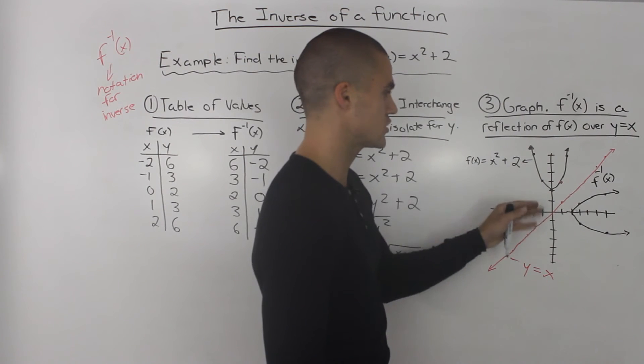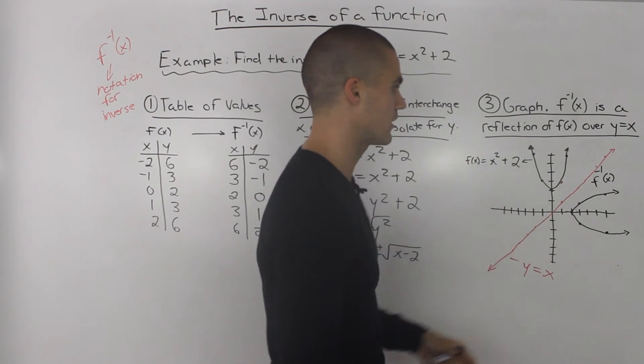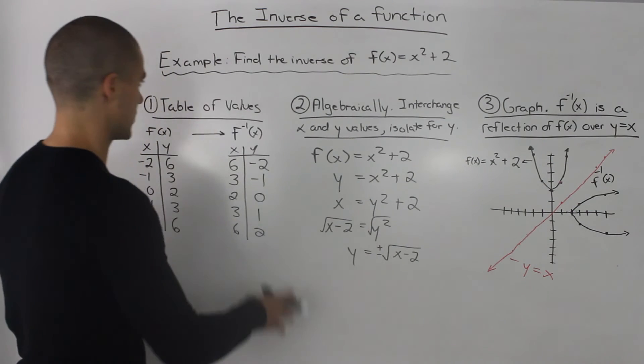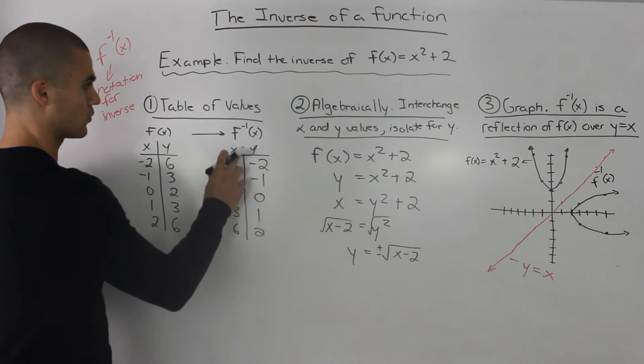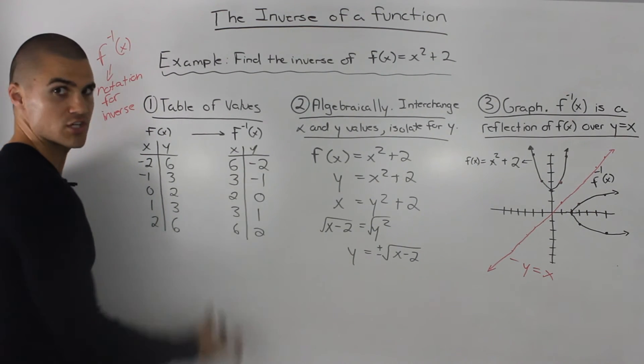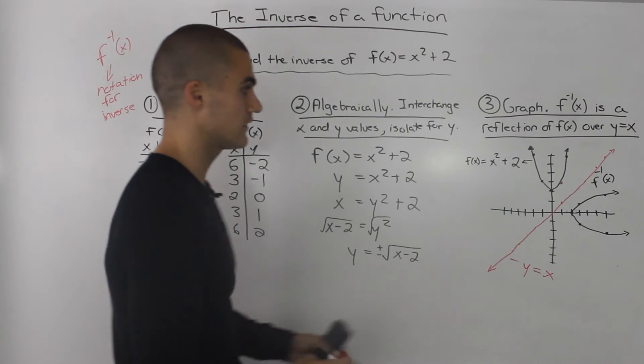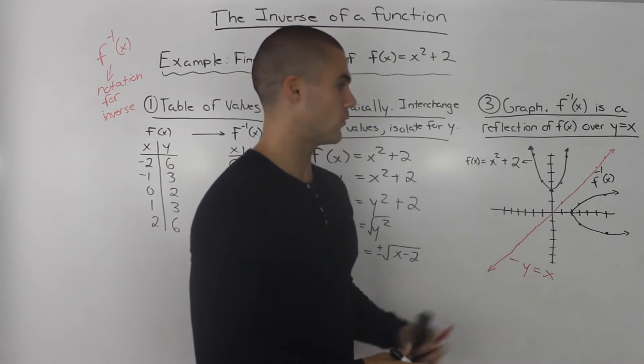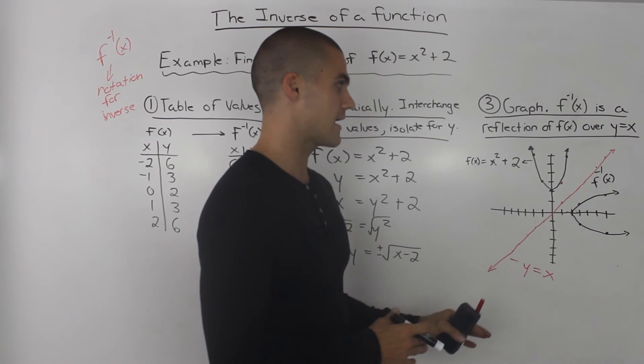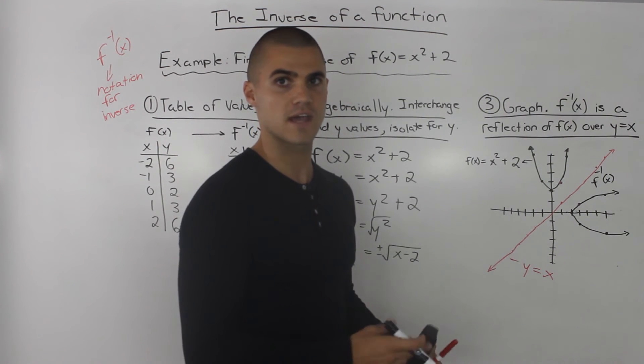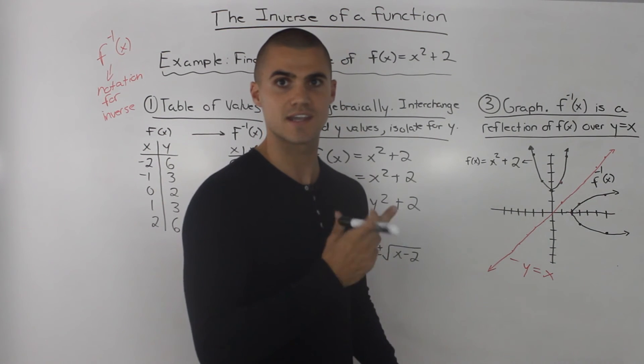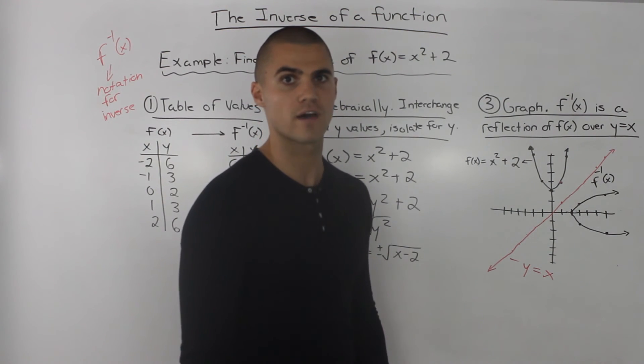And it's always reflected over this line. So that's another way that you can get the inverse if you're given the graph of the function, is just reflect every point. And step 3 follows the same process that we had in step 1 and 2. We're just constantly interchanging the x and y values here in the table, here algebraically, and here graphically. Whenever you reflect a graph over the line y = x, what you're doing essentially is interchanging those x and y values.